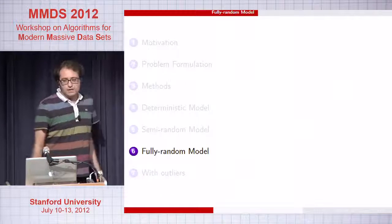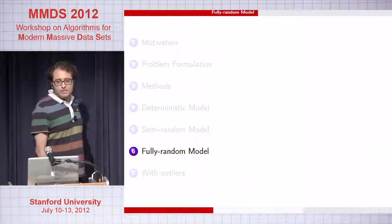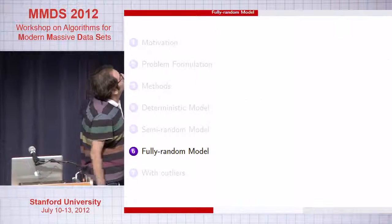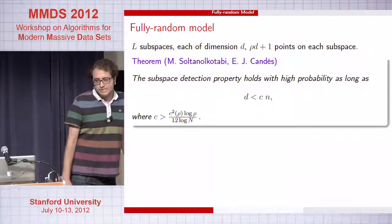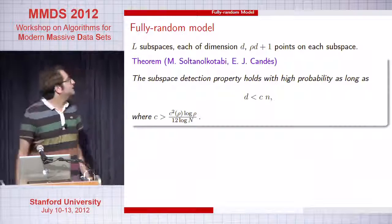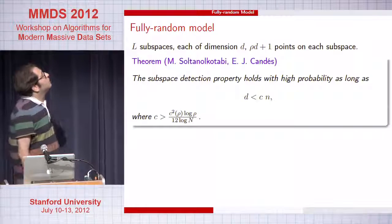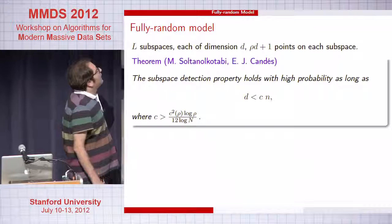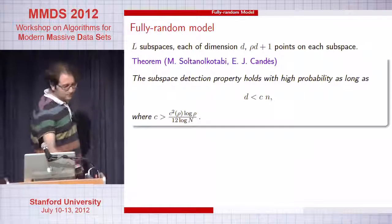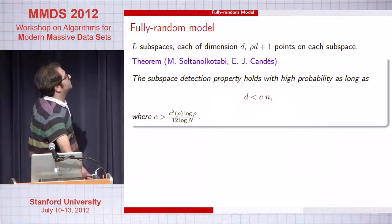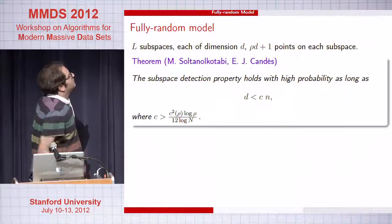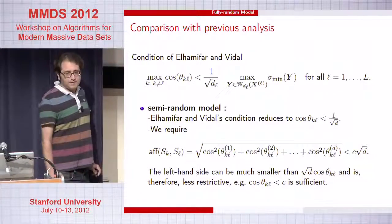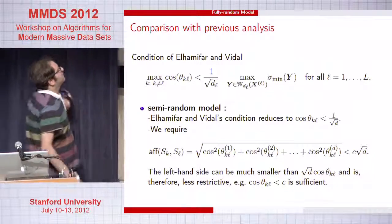There is an equivalent result in the fully random model, which says that the dimension of the subspaces can grow linearly with the ambient dimension. This was not something previously understood.